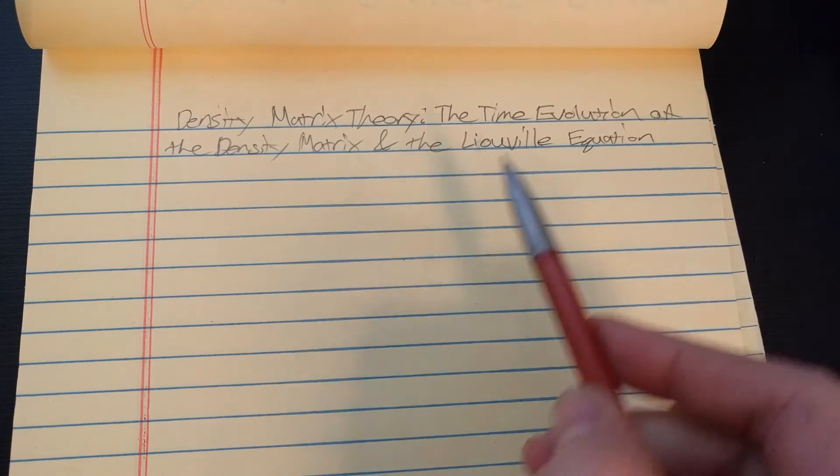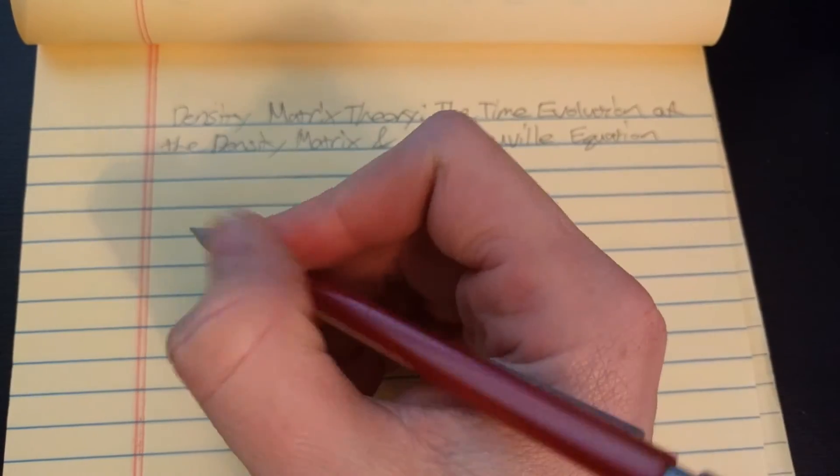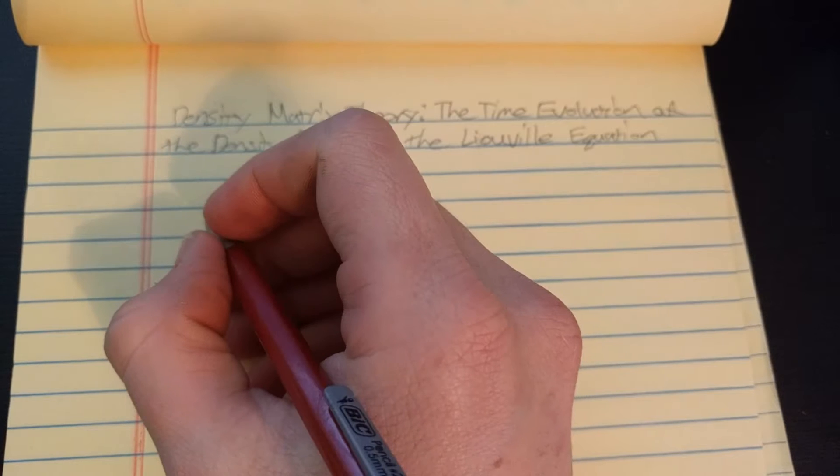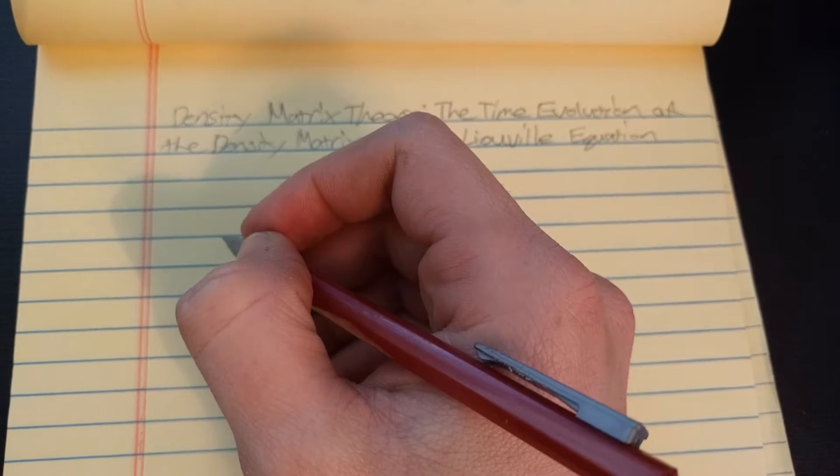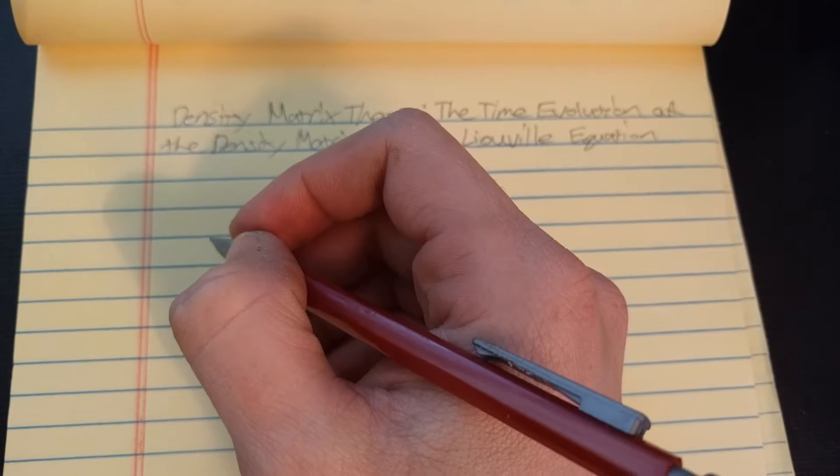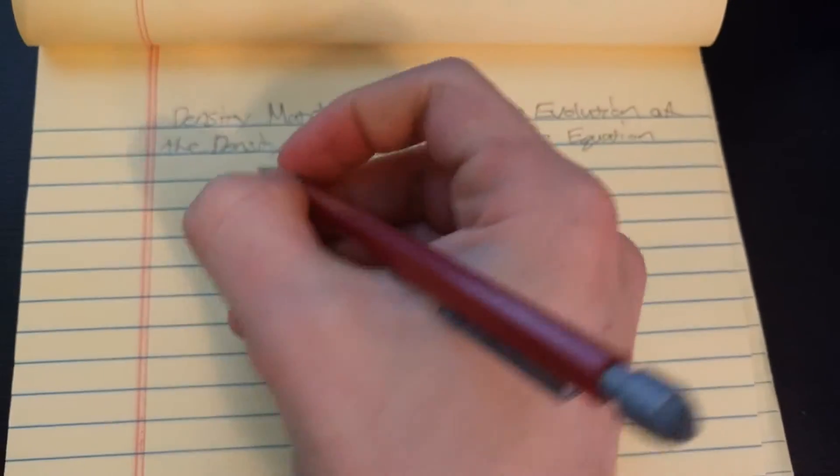So, to find the time evolution of the density matrix, all you gotta do is take the time derivative of the density matrix and you use the chain rule and you see that each component will use the time dependent Schrodinger equation to see that you get some commutator, which you'll see here.